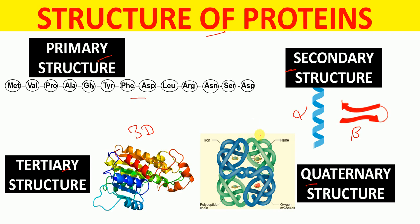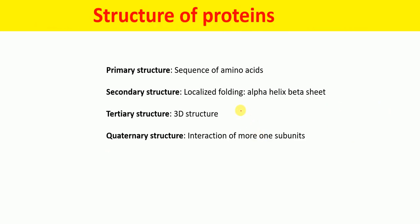So what is the primary structure of the protein? Primary structure of the protein is the sequence of amino acids, because proteins are made up of amino acids, and the sequence of amino acids is called the primary structure.